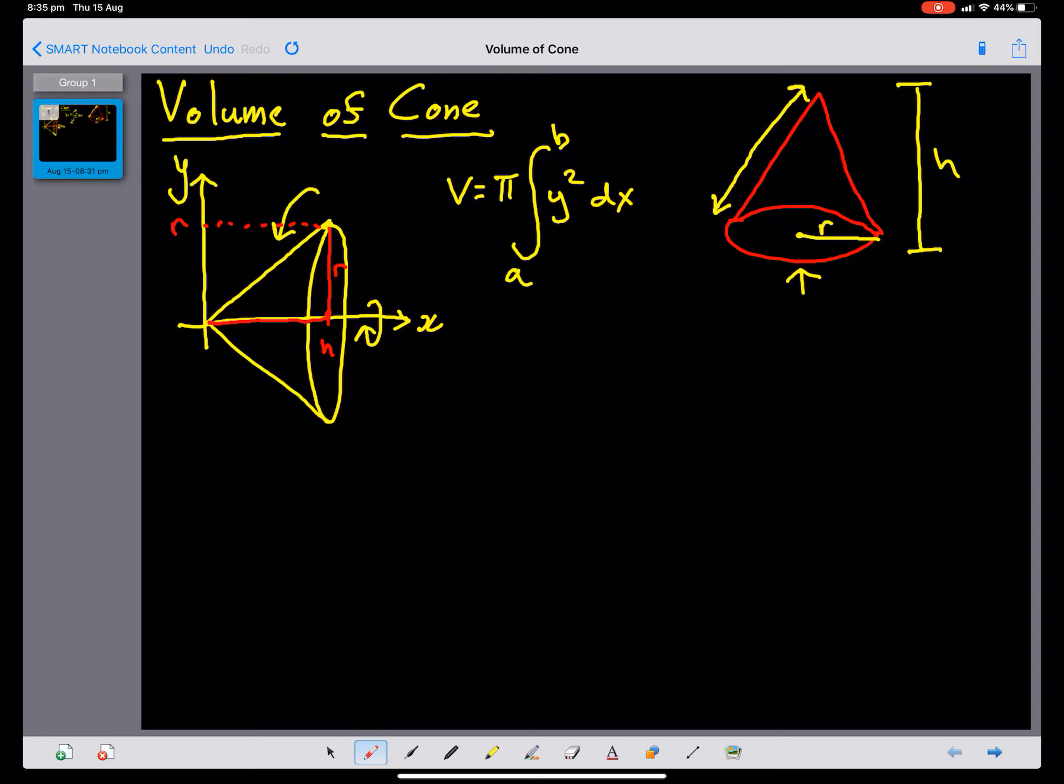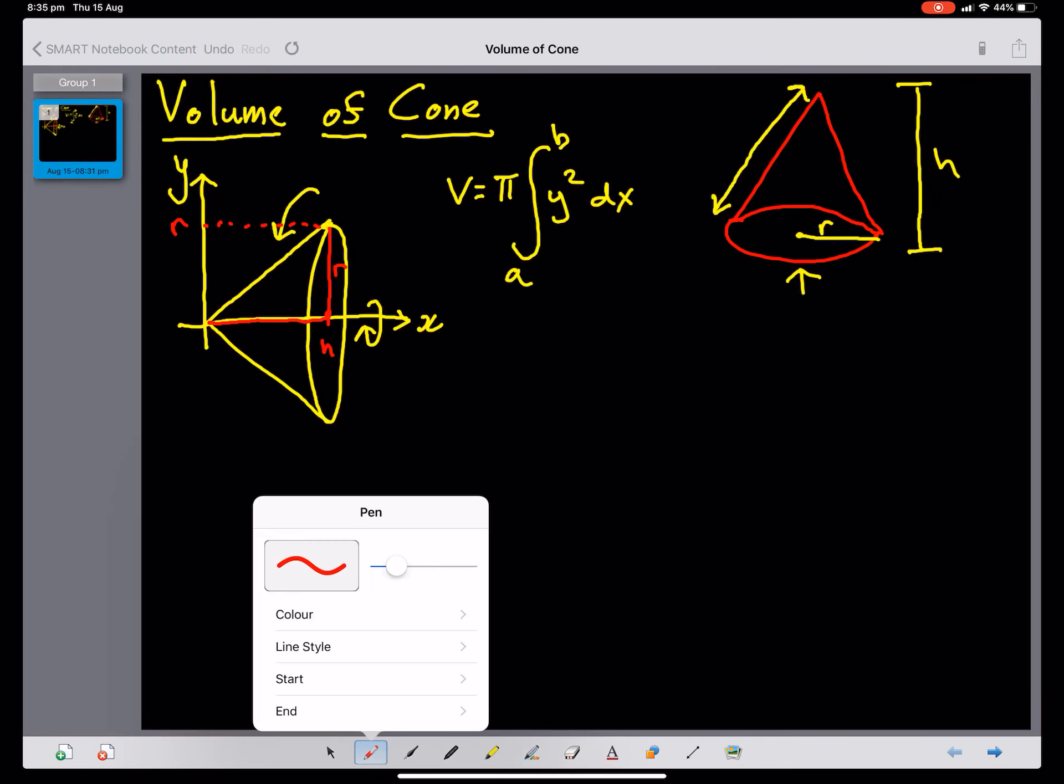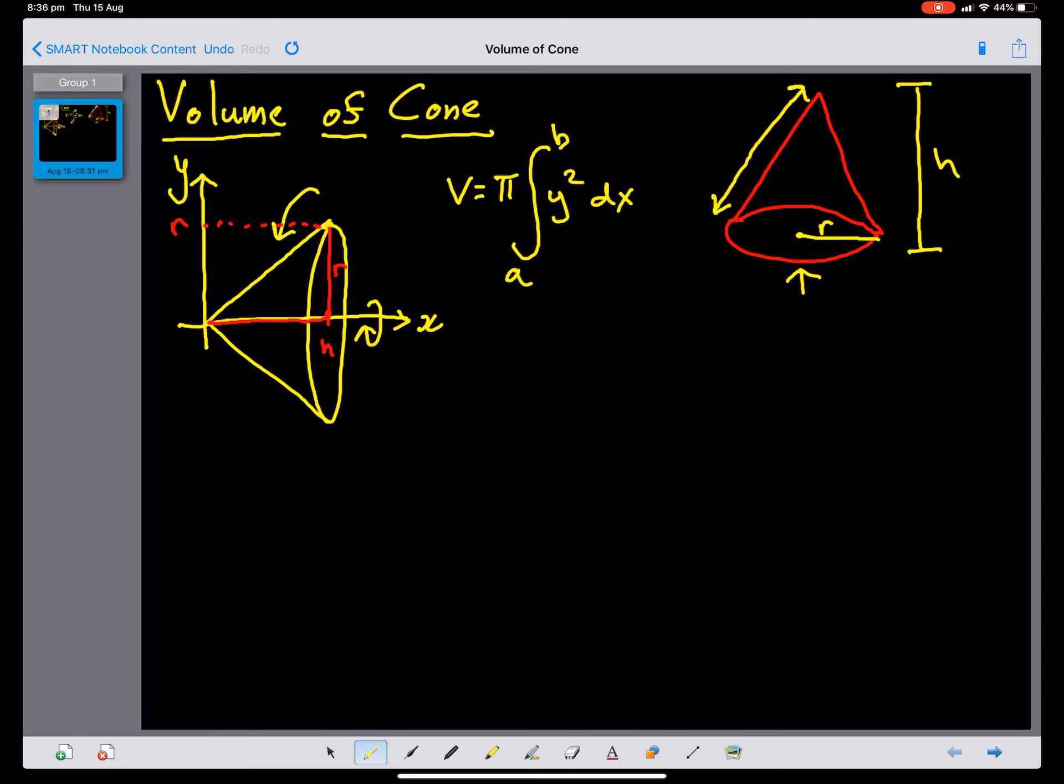Let's sub in all our values. We've got a pi. We're going to integrate from 0, from here, to here, which is h.